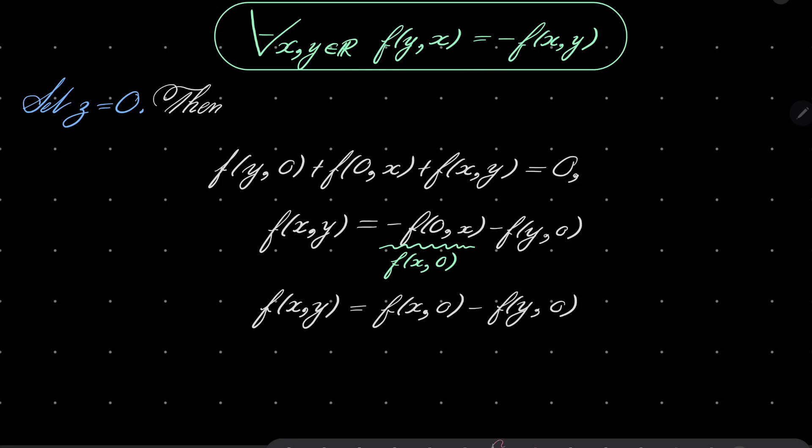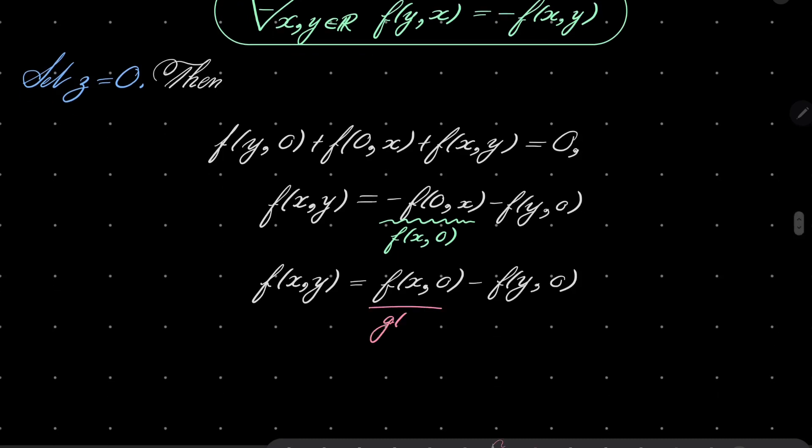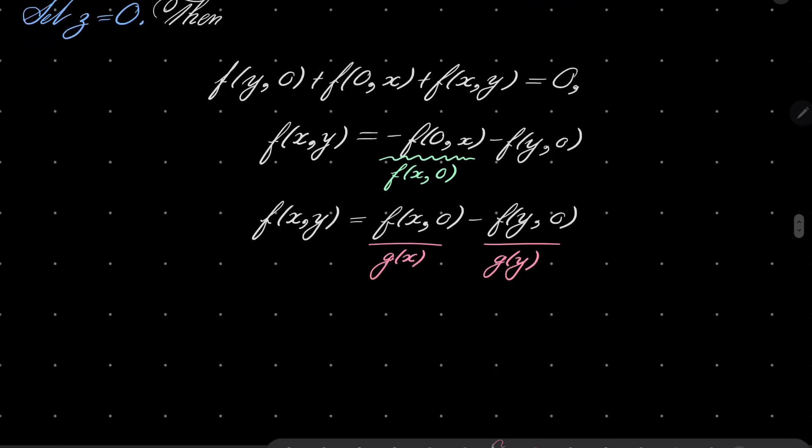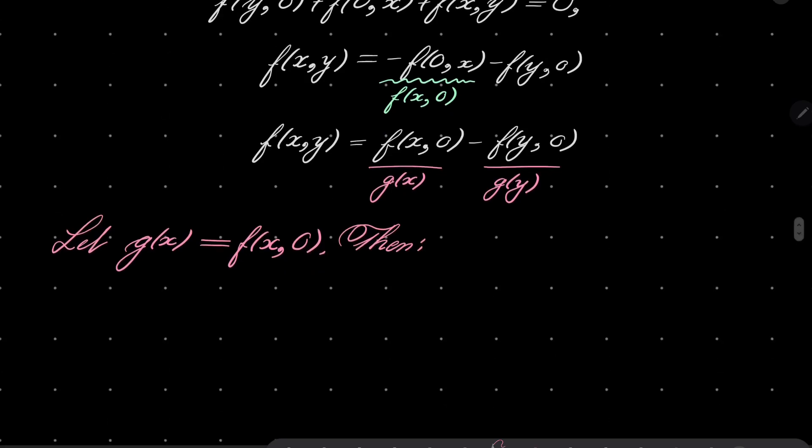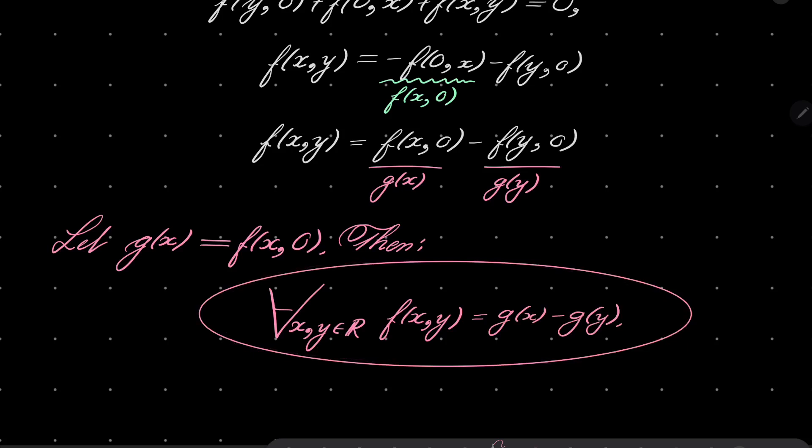And now it should be visible that it suffices to define g of x to be f of x0. So let g of x equal f of x0. Then of course for every two real numbers x and y, f of xy equals g of x minus g of y. And that closes our proof.